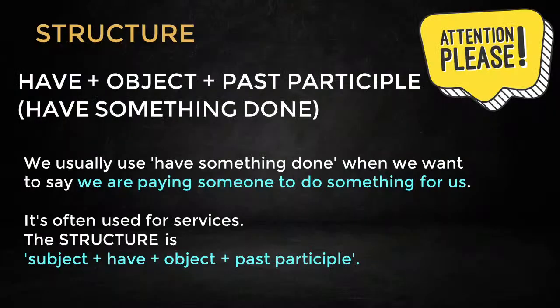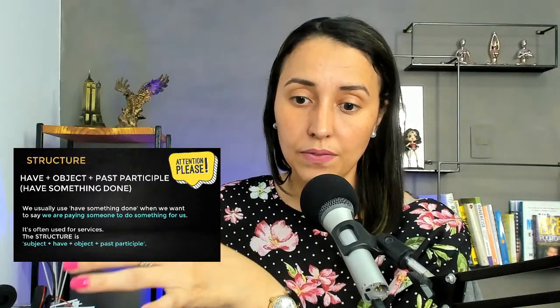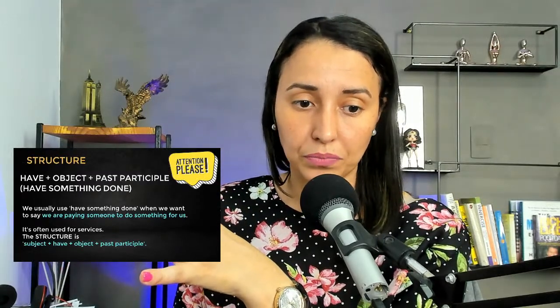We usually use 'have something done' when we are paying someone to do something. So: subject — I, John, Mary, my sister, my friend — then 'have' in the present, past, future, or continuous — then the object: the thing, the door, the house, my car, my wall, my bedroom — and the verb in the past participle, representing the action. That is very, very important.